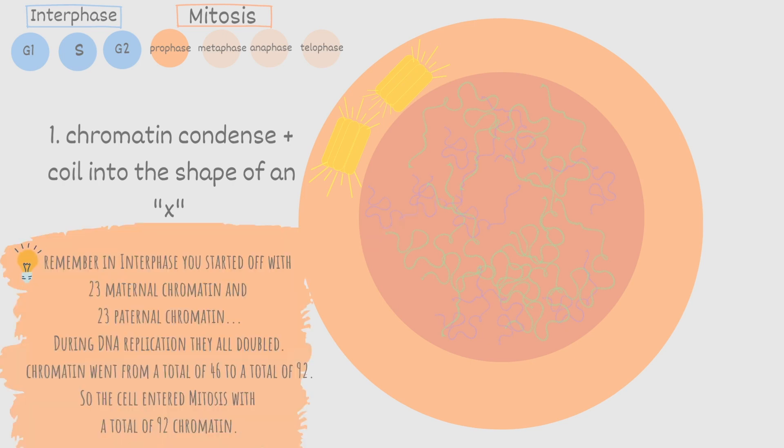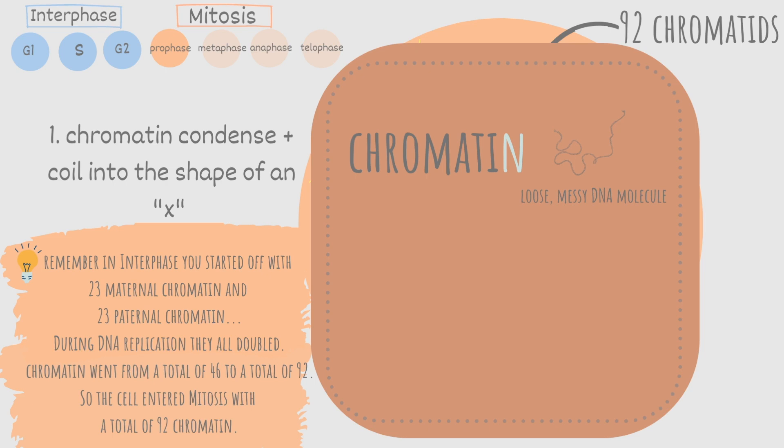As a side note remember in interphase you started off with 23 maternal chromatin and 23 paternal chromatin. During DNA replication they all doubled. Chromatin went from a total of 46 to a total of 92. So this cell that entered mitosis entered with 92 chromatin. Also there is a difference between chromatin and chromatid. Chromatin is referring to a DNA molecule when it is loose, messy, and the DNA itself is unrecognizable. Chromatid however is when this same DNA molecule is more structured. So chromatin makes up chromatids.